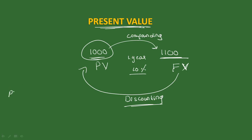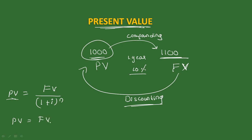The present value formula is: present value is equal to future value divided by (1 plus i) to the power n. This gives us the present value of a future amount.